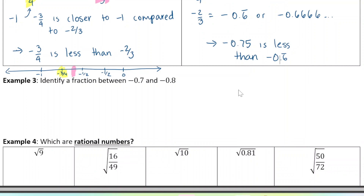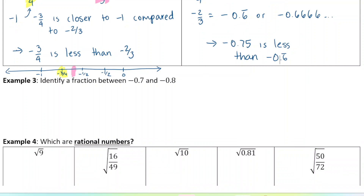Next question: identify a fraction between negative 0.7 and negative 0.8. This is a good review of how to convert decimal numbers into fractions. If we want a number between negative 0.7 and negative 0.8, we add a hundredths position into our decimals. So I could choose many numbers — negative 0.71, negative 0.72, and so on.